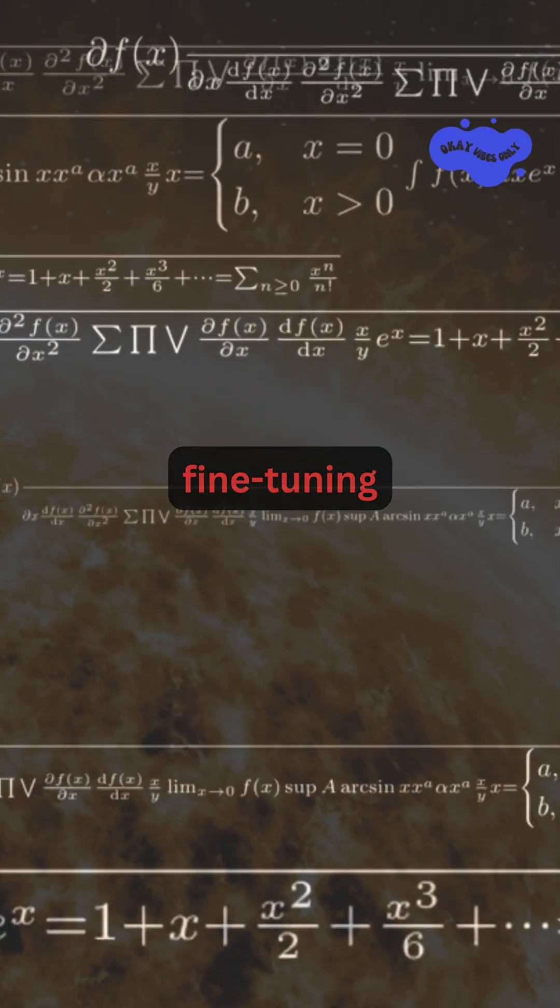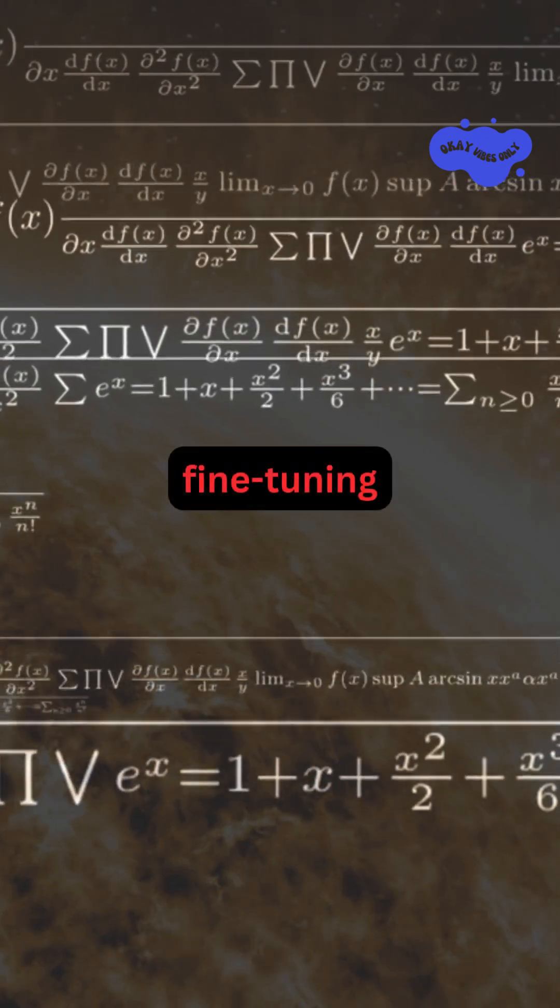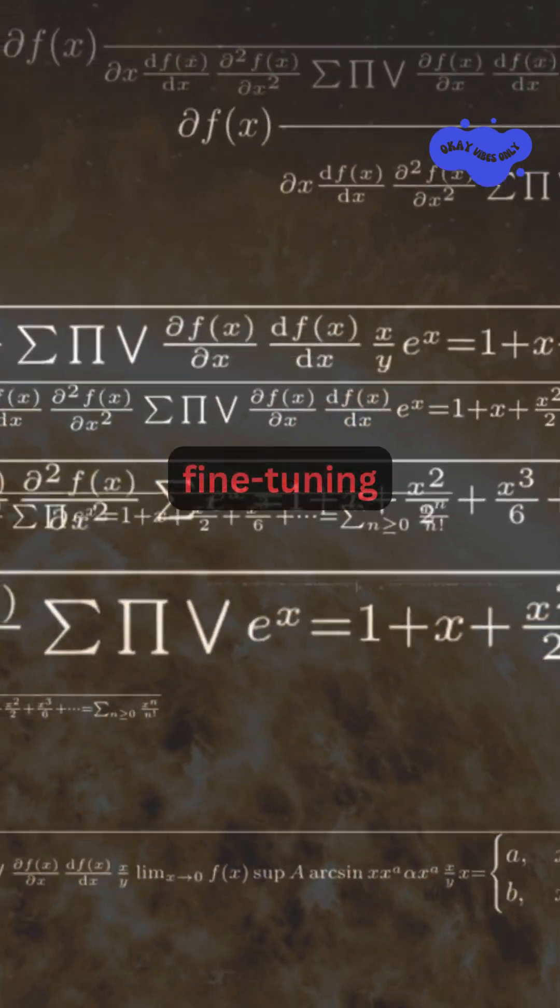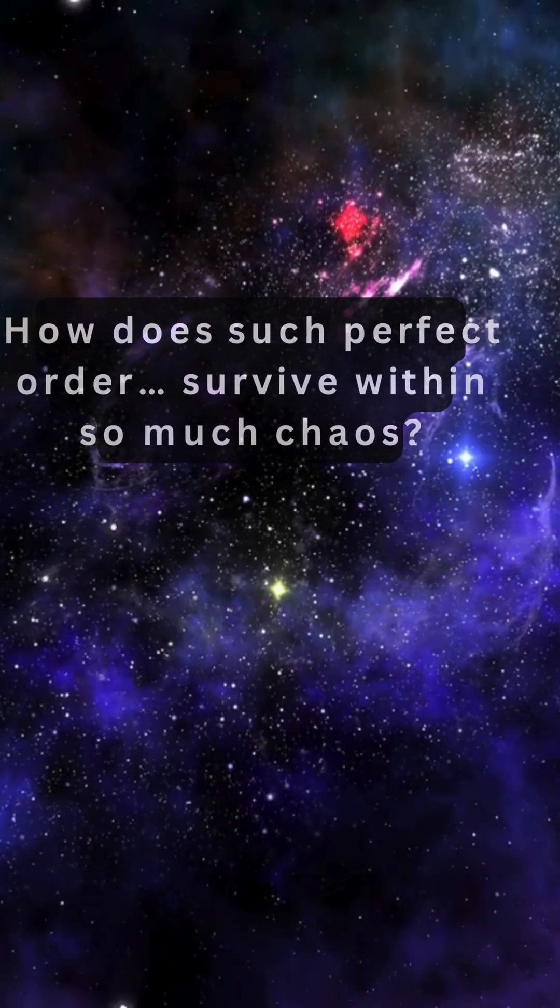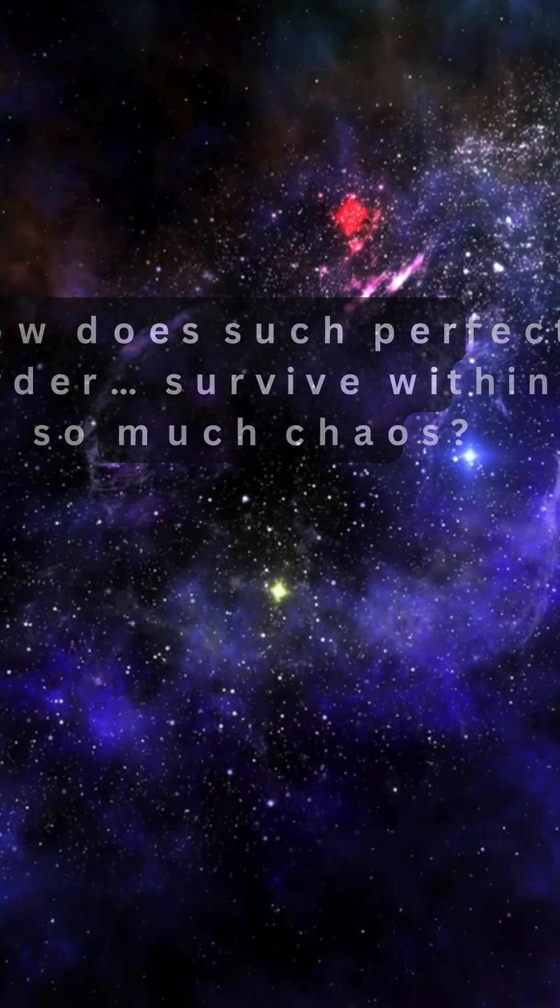Scientists call this fine-tuning, a delicate set of values that allow the universe to function at all. So here's the real question. How does such perfect order survive within so much chaos?